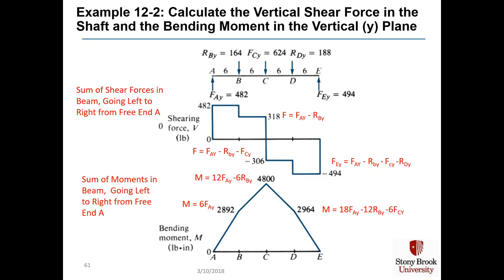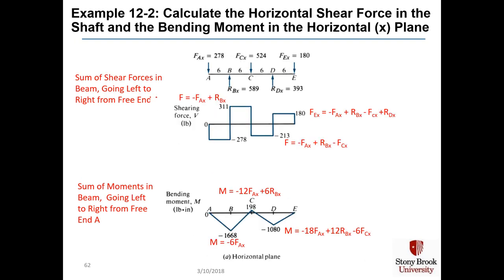The bending moment curve looks almost like a perfect triangle, where the peak Y bending moment is right at point C — where the power comes in from the sprocket. In the horizontal direction, the shear force is more of a stair-step up-down pattern due to the location of the forces and the evenness of the X-direction forces. The bending moment in the horizontal plane has smaller numbers than in the vertical plane, and comes to near zero at the sprocket in the X direction.